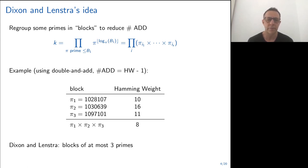So it's much more efficient to compute P1 times P2 times P3, and then multiply this number by P, than taking the primes one after the other. So that was the idea of Dixon and Lenstra. They implemented this algorithm, but of course finding the best combination of all the primes was way too expensive. So the limitation was that they only considered blocks of at most three primes.